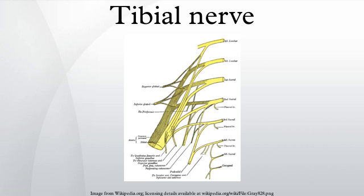The tibial nerve is a branch of the sciatic nerve. The tibial nerve passes through the popliteal fossa to pass below the arch of soleus. In the popliteal fossa, the nerve gives off branches to gastrocnemius, popliteus, soleus, and plantaris muscles.